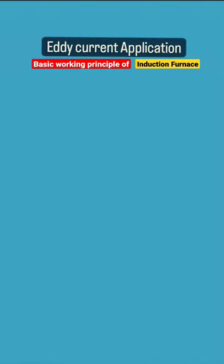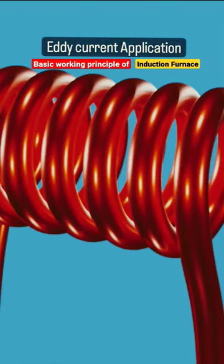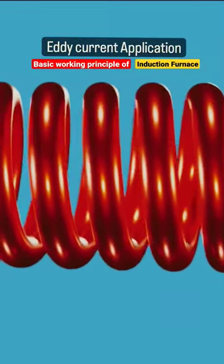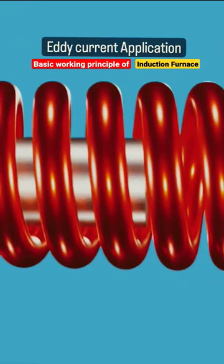Induction furnace basically consists of a coil. In between this coil, metal to be heated or melted is placed.